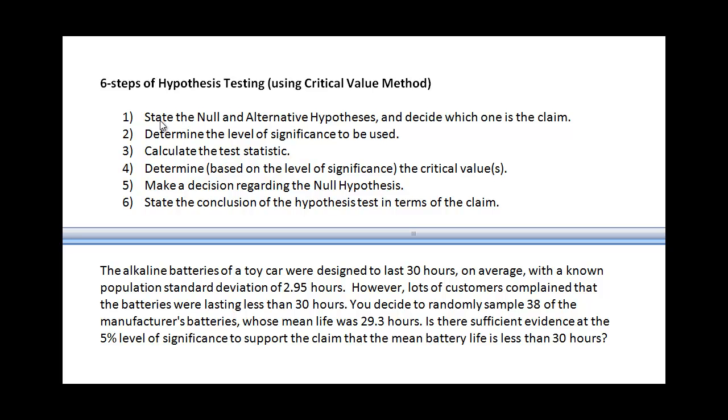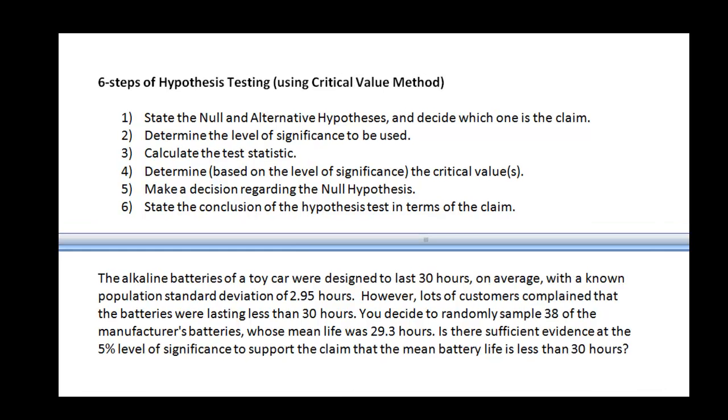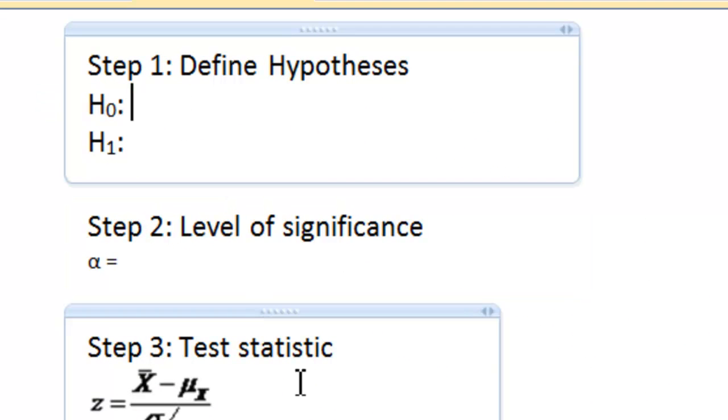Walking through these six steps, the first thing you should do is state the null and alternative hypotheses. And then I suggest you decide which one is the claim. That's pretty important as well. Here in step one, decide which of these is the claim - the null or the alternative - because we're going to, in our final step, state the conclusion of the hypothesis test. So let's start with the null and alternative hypothesis. Let me show you how we're going to define the hypothesis.